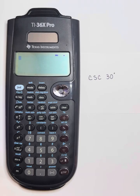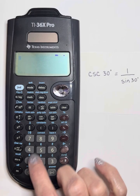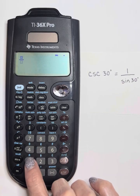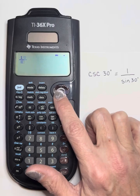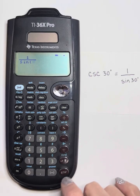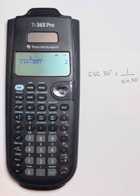You should know that cosecant is the reciprocal of the sine function. So the way we put cosecant of 30 degrees in the calculator is 1 over the sine of 30 degrees. I use my fraction button, which is above the 7 key — I do 1, then use the cursor to go down to the denominator and put sine of 30 degrees, and I get 2.